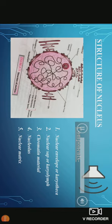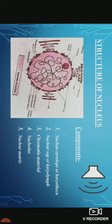Dear students, this slide is showing you the structure of the nucleus. You are seeing the different components: nuclear envelope or karyotheca, nuclear sap or karyolymph, chromatin material, nucleolus, and nuclear matrix. Let us know about everyone somewhat in detail.